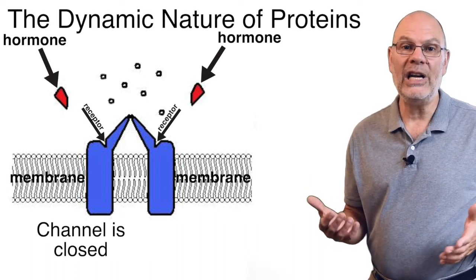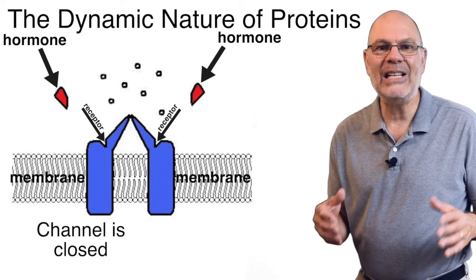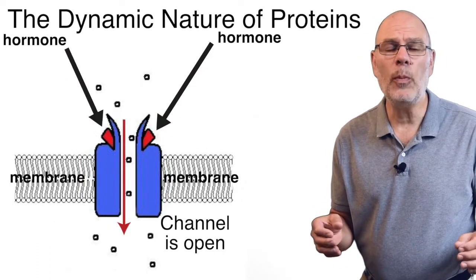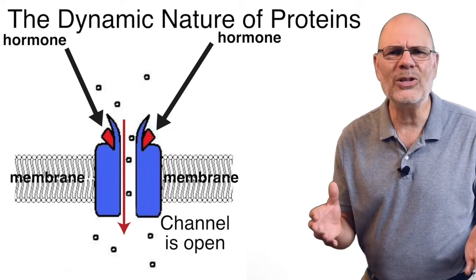What we've covered explains the specificity of protein shapes. But what about the ability of proteins to change their shape? Here's a cartoon of a membrane channel with an attached receptor. The channel is a protein, and it's closed until a hormone binds with the receptor. Then the channel opens up, allowing some particular substance to diffuse through. How does this work?